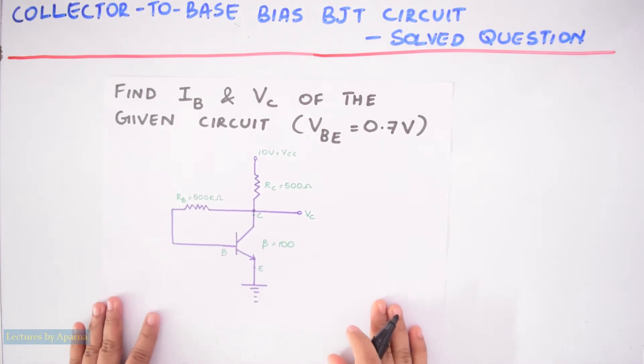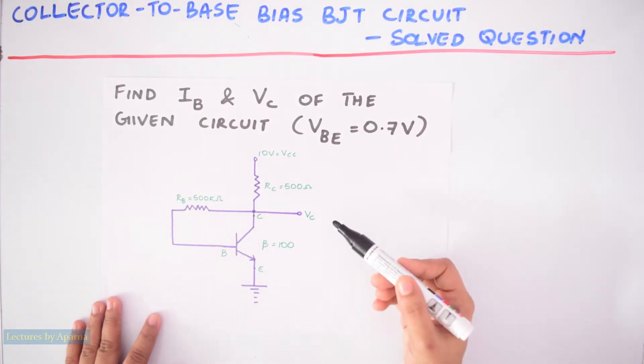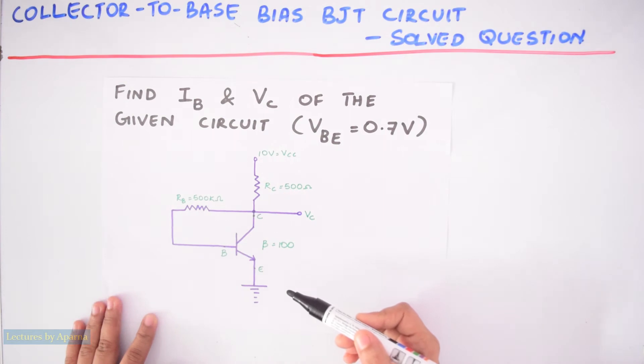I will read the question: Find IB and VC of the given circuit, given VBE equal to 0.7V. So this is a collector-to-base biasing BJT circuit.